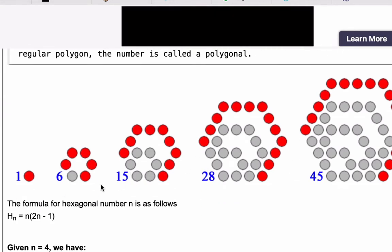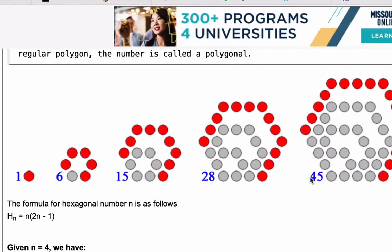So the first five hexagonal numbers are shown in this picture here. We've got one, six, 15, 28, and 45. And if you notice, these form a hexagonal shape. So that's why they're called hexagonal numbers.